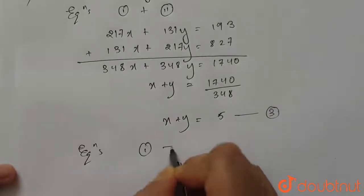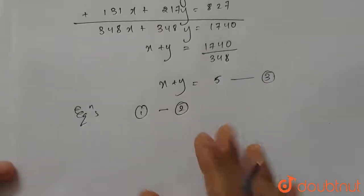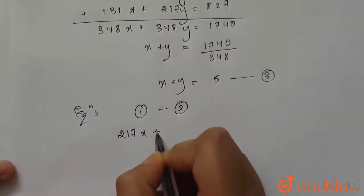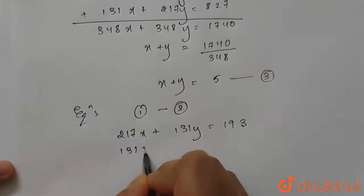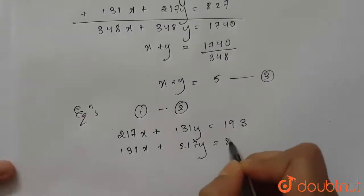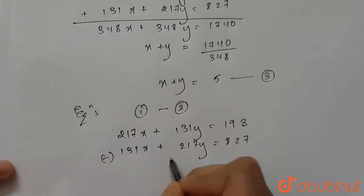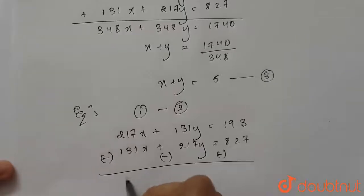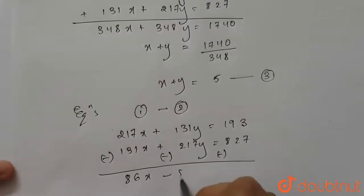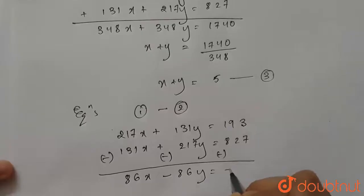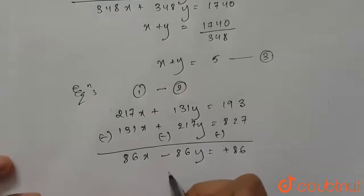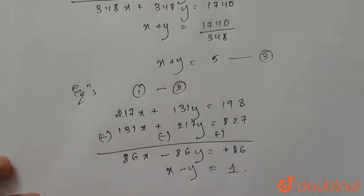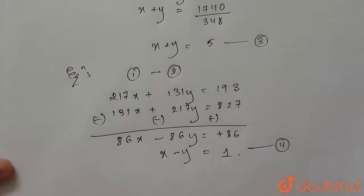Now let's subtract equation 2 from equation 1. After subtracting, we get 86x - 86y = 86. The signs change, so we get x - y = 86/86, which equals 1. Let this be equation number 4.